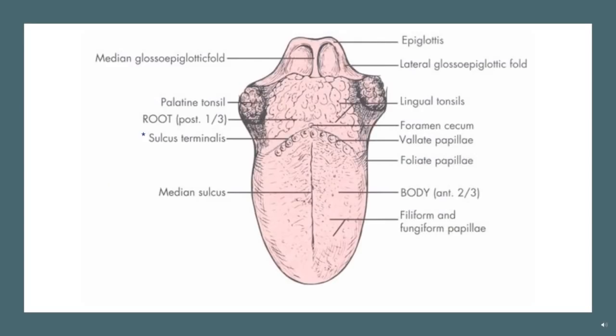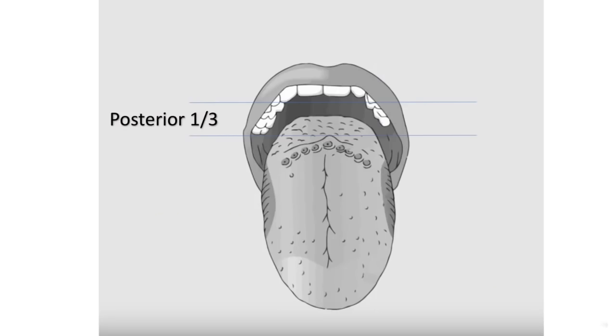In this image we have the dorsum surface of the tongue. You can see that the tongue is divided - you have the root one-third which is the posterior one-third, and then you have the body which is the anterior two-thirds. It's essentially divided by the sulcus terminalis.